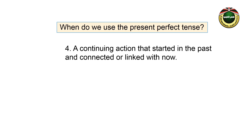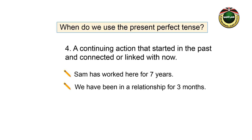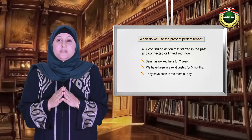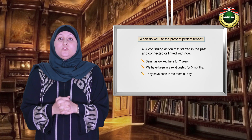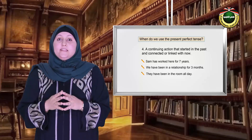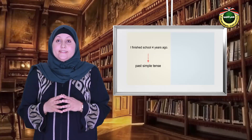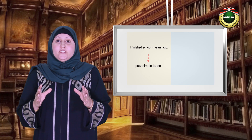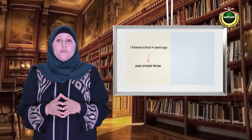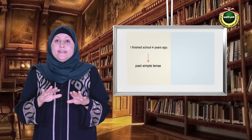Four: a continuing action that started in the past and connected or linked with now or the present. Sam has worked here for seven years. We have been in a relationship for three months. They have been in the room all day. In order not to mix things up, I would like to draw your attention that number four is different from the past simple tense.